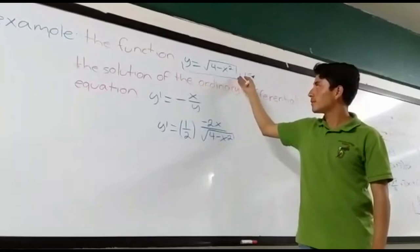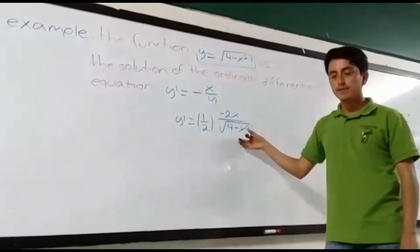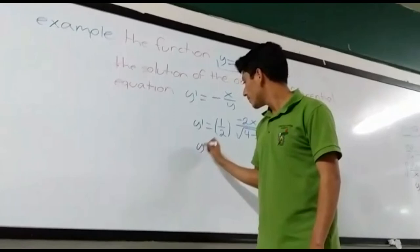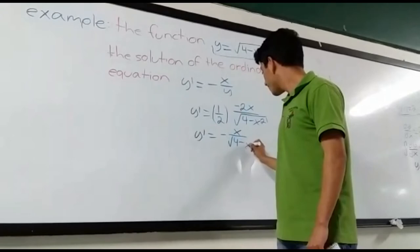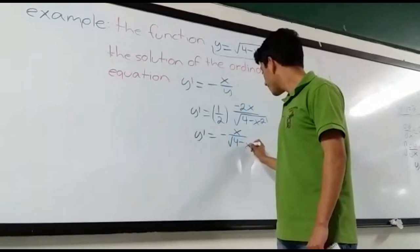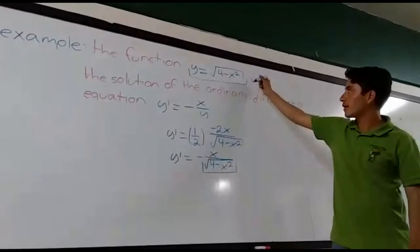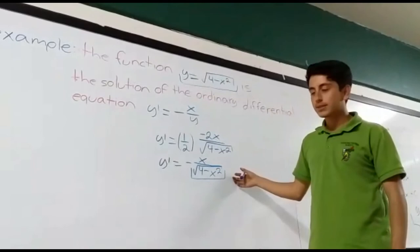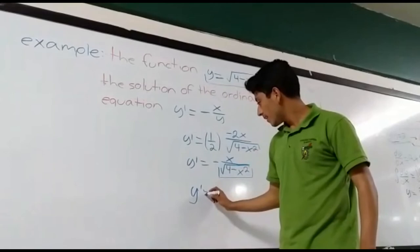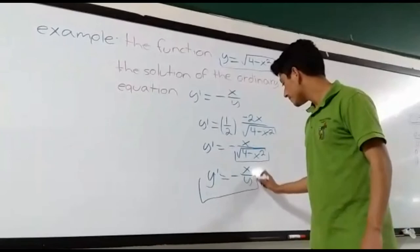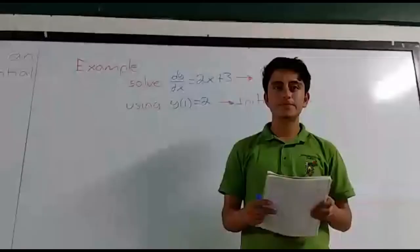This is the result of the derivative of this function. Now we only have to simplify this result. As you can see, this term is equal to the first function, so we have to replace it. And this is the result of our differential equation.